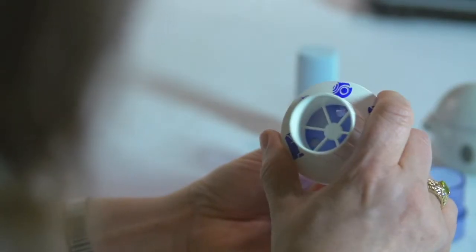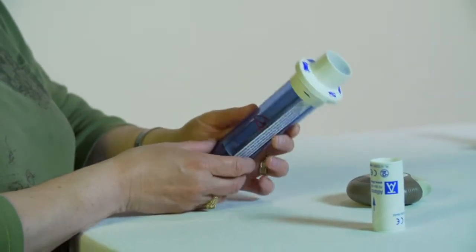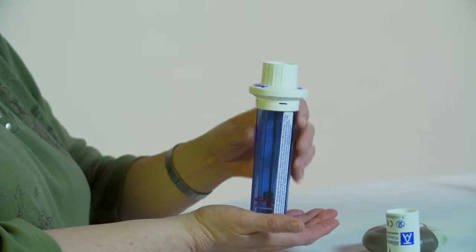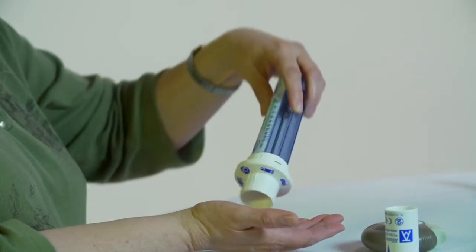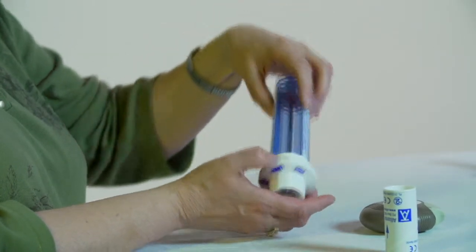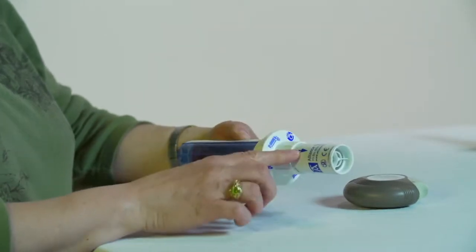I will now demonstrate how to use the InCheck Dial. For the purposes of this demonstration, I will set the dial for the Diskus. Turn the dial to the picture of the Diskus. The dial should click into place. Next, reset the device by gently tapping it on your hand until you see and hear the magnet fall. This pushes the red indicator to the bottom. Next, turn it right side up so the magnet falls toward the dial. Attach the disposable mouthpiece. Be sure that the arrow is pointing out.